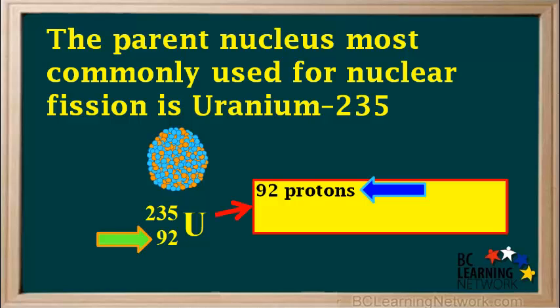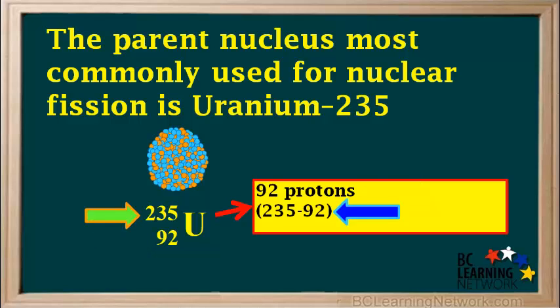The nuclear notation tells us it has 92 protons and 235 minus 92, which is 143 neutrons.